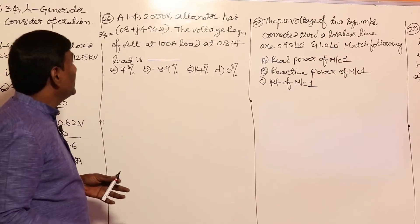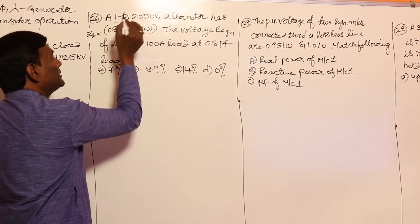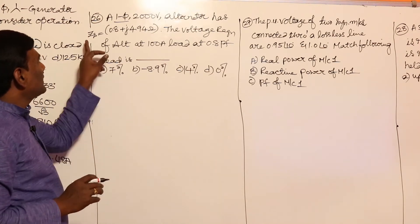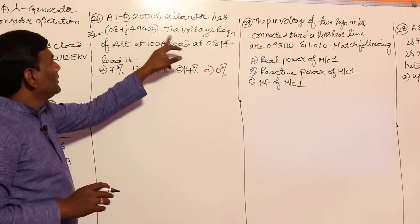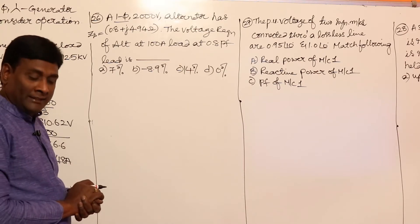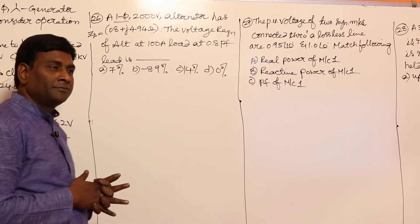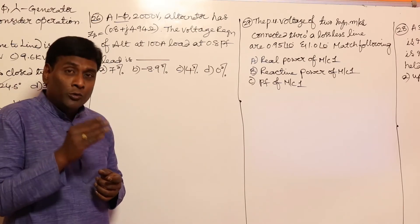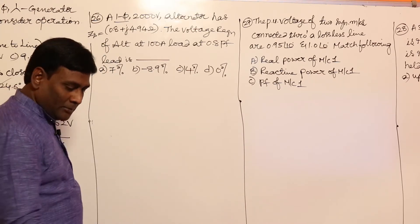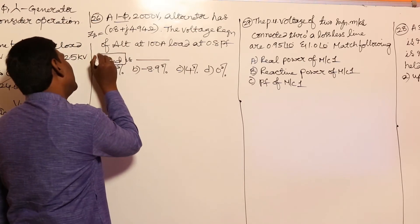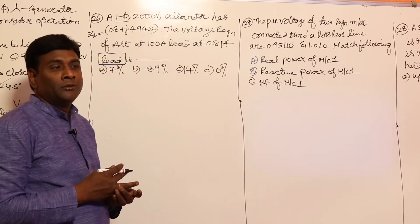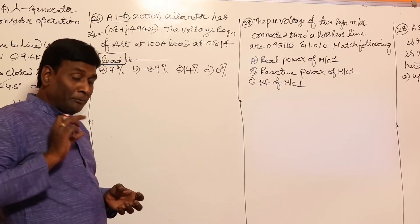Now let us take another question — a single-phase 2000-volt alternator has synchronous reactance and total impedance given. Find the voltage regulation at 100 amperes load at 0.8 pf lead. Many times in synchronous machines, by seeing the options you can directly answer. At 0.8 pf lead, the voltage regulation should be negative.